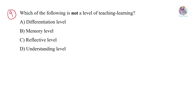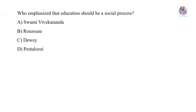Which of the following is not a level of teaching-learning? The levels are: differentiation level, memory level, reflective level, and understanding level. The differentiation level — dealing with material or groups of students in different ways of learning — is not a part of teaching-learning levels. Who emphasized that education should be a social process? The answer is John Dewey.